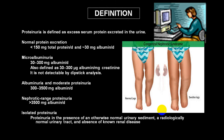Normal protein excreted accounts for less than 150 milligram total protein per day, or 30 milligram of albumin per day. When albumin in urine is less than 30, it is very difficult to detect by a urine test. When it is between 30 to 300 milligram, we call that microalbuminuria, and it can be detected by dipstick.